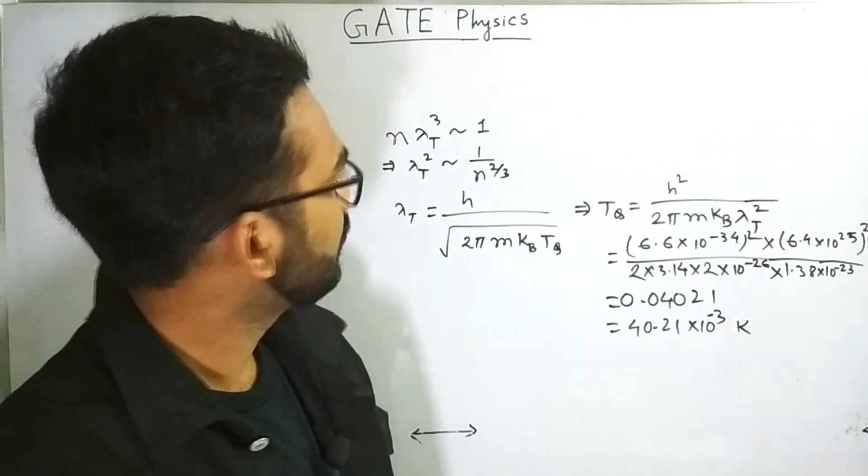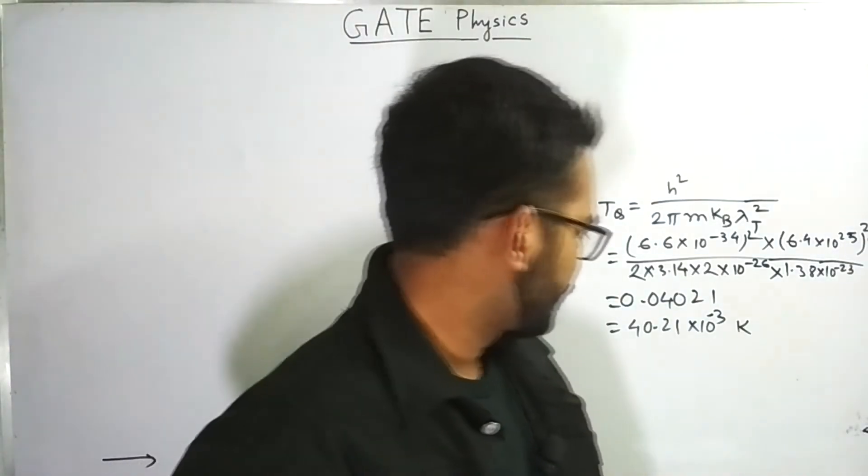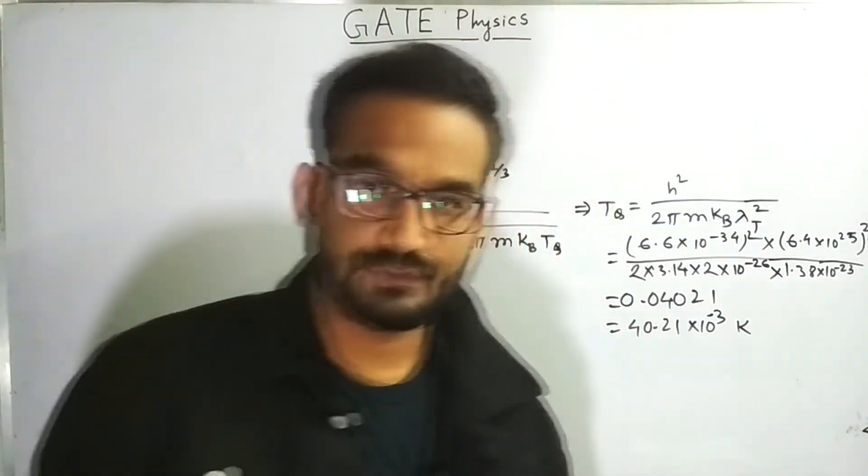So, up to 1 decimal, it will be 40 point, up to 1 decimal, 40.2. So, 40.2 into 10 to the power minus 3 Kelvin. So, this is the answer.